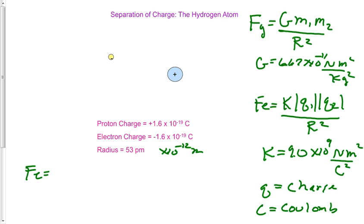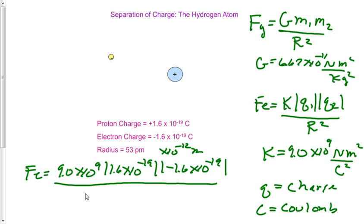Force electric equals 9.0 times 10 to the ninth. Multiply by the absolute value of 1.6 times 10 to the minus 19. Multiply by the absolute value of negative 1.6 times 10 to the minus 19. All divided by 53 times 10 to the minus 12 squared. And then we get a value of 8.2 times 10 to the minus 8 for the force electric. So force electric equals 8.2 times 10 to the minus 8 newtons.